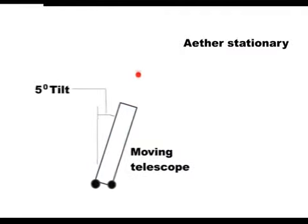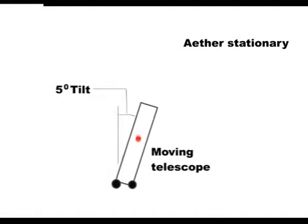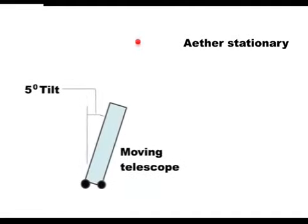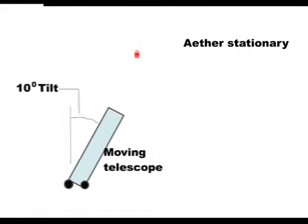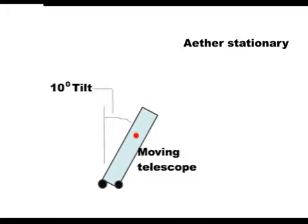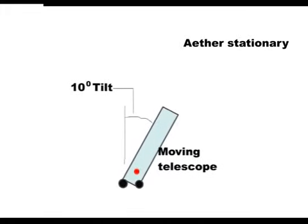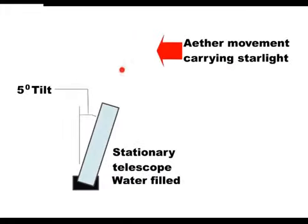To recap, if it is the telescope that is moving, then when it is filled with water, it has to be tipped further to see the star. If the telescope is stationary and the starlight drifting past us, then it does not have to be tipped further.